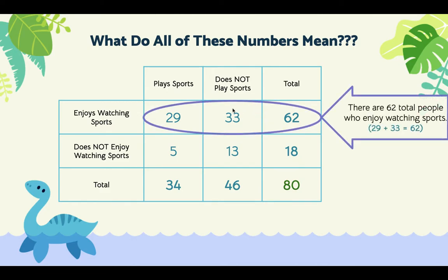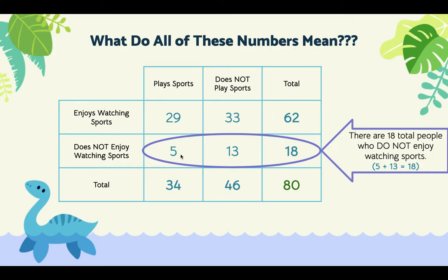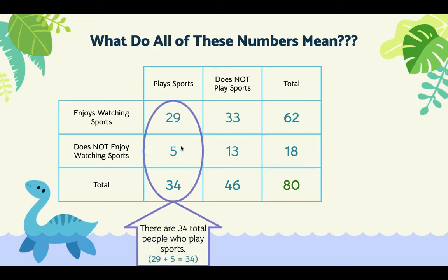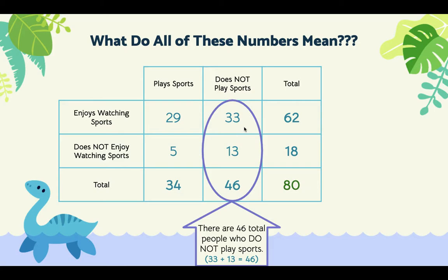Looking at this row, there are a total of 62 people who enjoy watching sports — 29 plus 33 equals 62. Looking at this row, there are 18 people who do not enjoy watching sports — 5 plus 13 is 18. Looking at columns, there are 34 people who play sports — 29 plus 5 is 34. And there are a total of 46 people who do not play sports — 33 plus 13 equals 46.